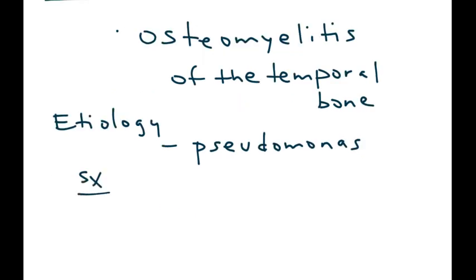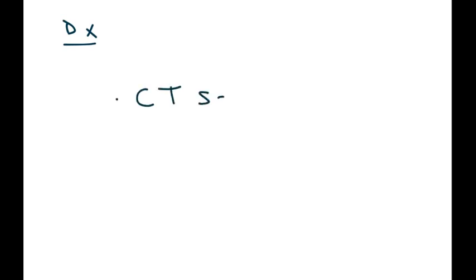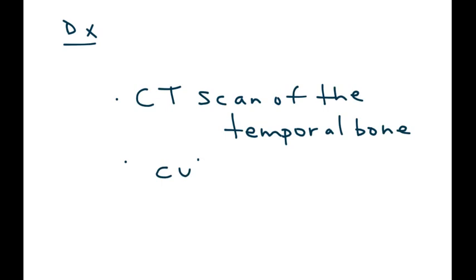Symptoms of malignant otitis externa include severe ear pain and foul-smelling purulent ear discharge. Some patients develop cranial nerve paralysis involving cranial nerves 9, 10, and 11, making it quite serious. Diagnosis involves a CT scan of the temporal bone, cultures, and if necessary, a biopsy of the ear canal.